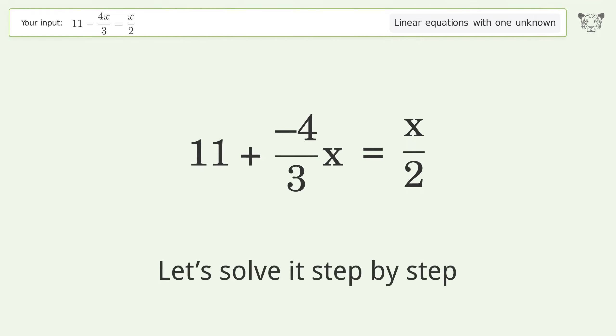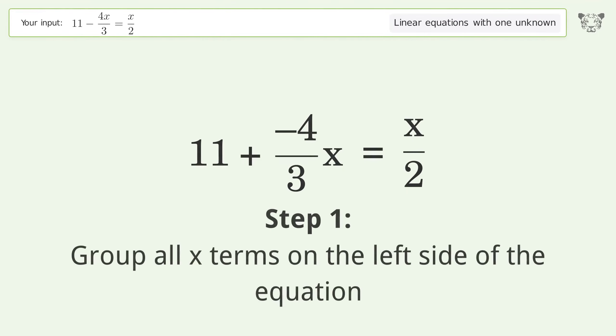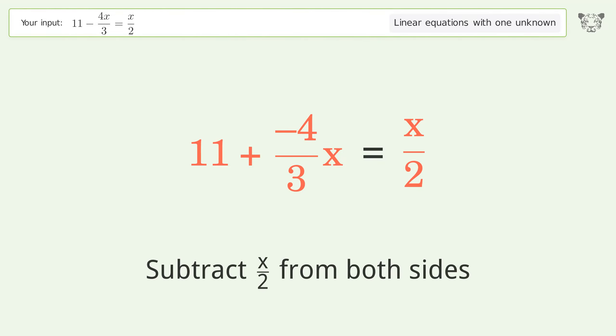Let's solve it step by step. Group all x terms on the left side of the equation. Subtract 10 over 2 from both sides.